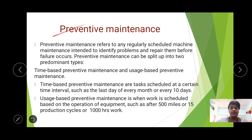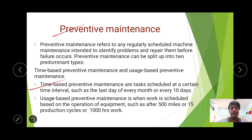The two types of preventive maintenance are time-based and use-based preventive maintenance. Time-based preventive maintenance is done at regular time intervals from when the machine started operations — for example, after every week, every month, every 10 days, or every year. This scheduled task is done after a certain fixed period of time.